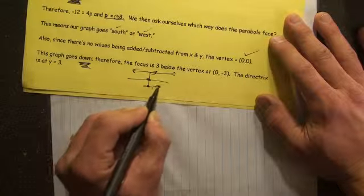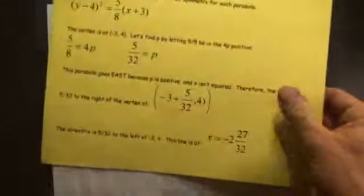We'll put a 3 here, negative 3 there. And there you go. The parabola goes downward. Bam!